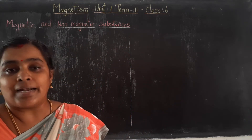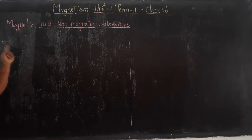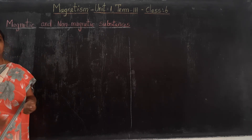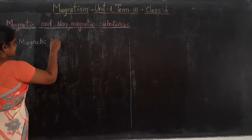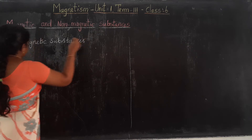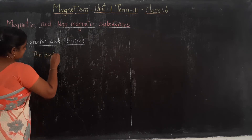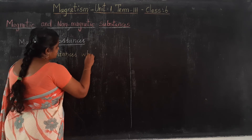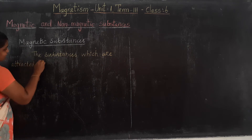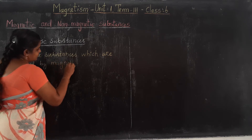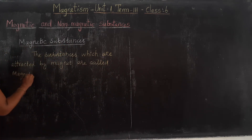So students, some substances are attracted by magnets, whereas some substances are not attracted by magnets. The substances which are attracted by magnets are called magnetic substances. Let us write: what are magnetic substances? The substances which are attracted by magnets are called magnetic substances.